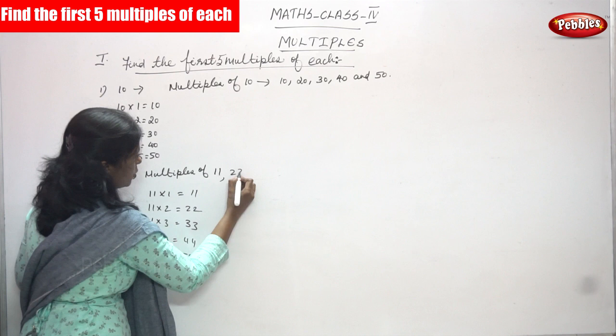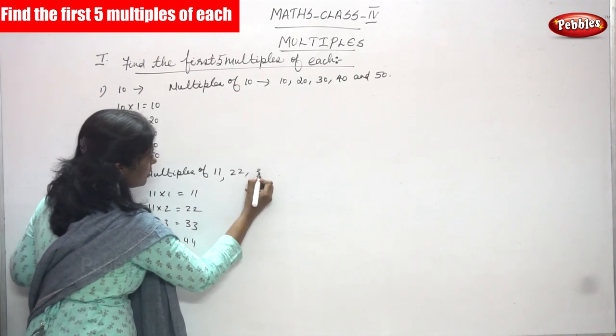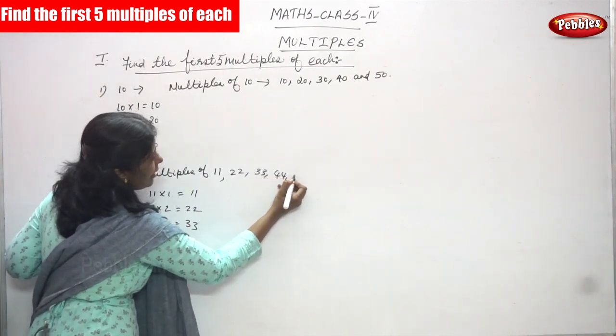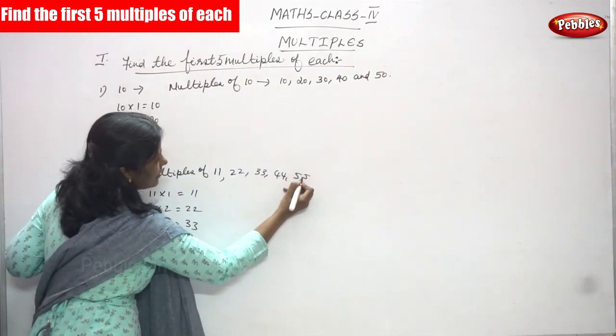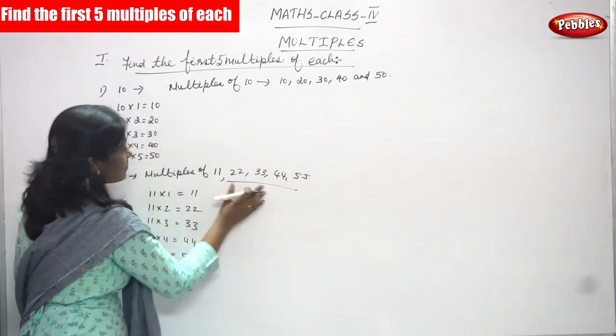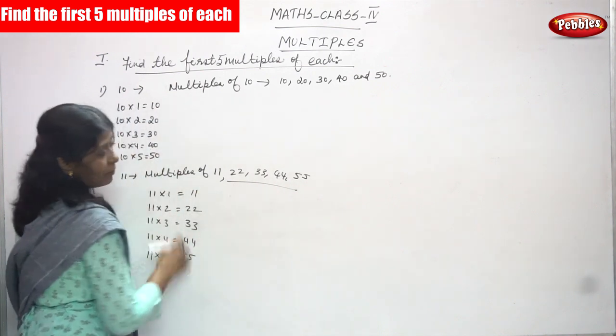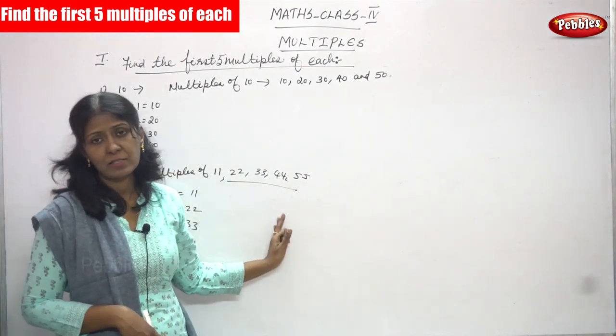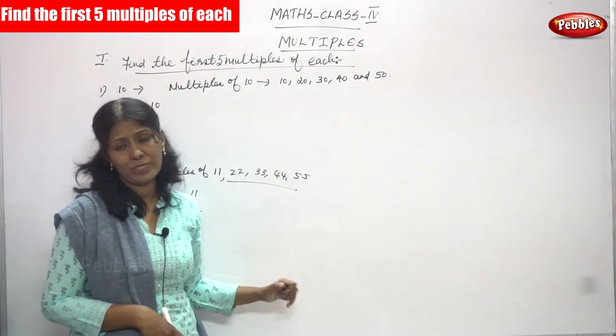So 11, 22, 33, 44, and 55 — these are the multiples of 11. This is very important. This is the answer for the question.